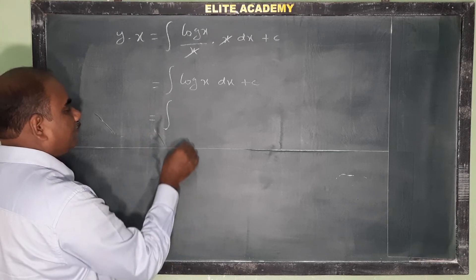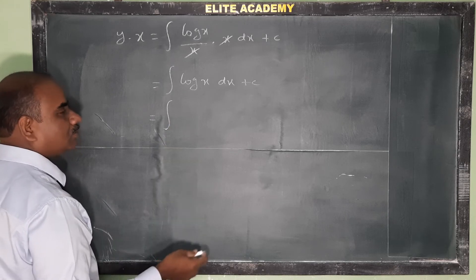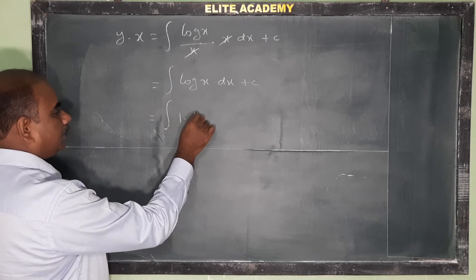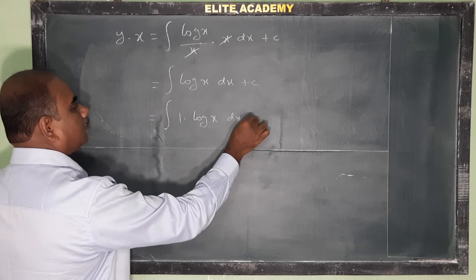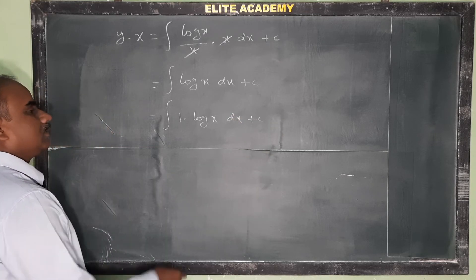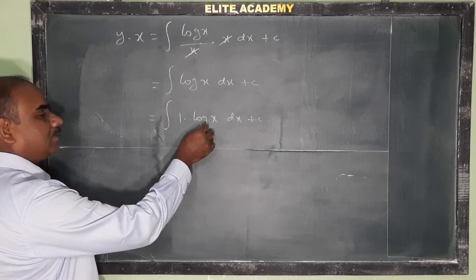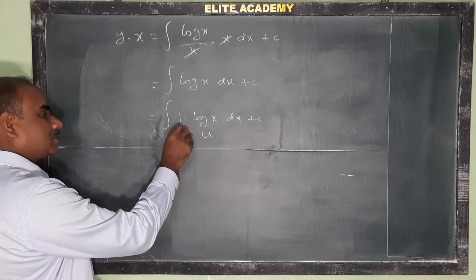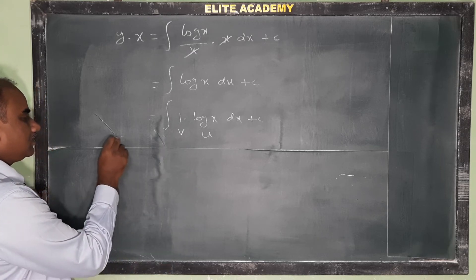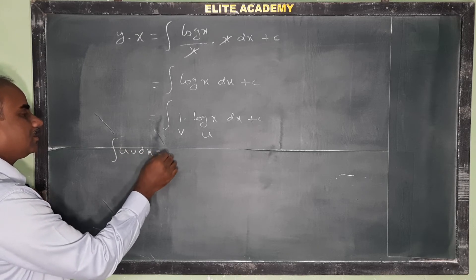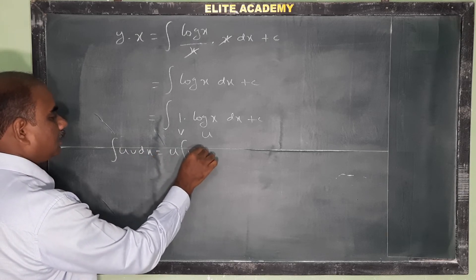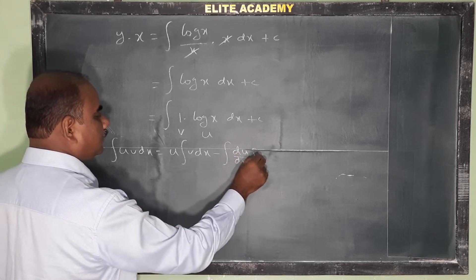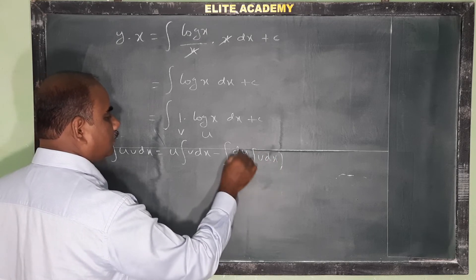To solve integral of log x, we use the integration by parts formula. We write log x as 1 into log x, treating log x as the first function and 1 as the second function. The by parts formula is: integral u v dx is equal to u into integral v dx minus integral of du by dx times integral v dx, whole dx.